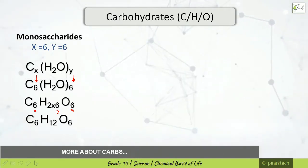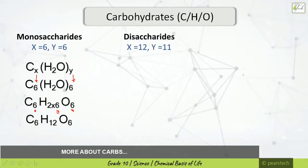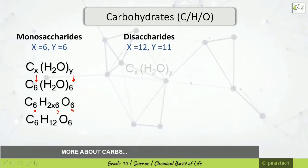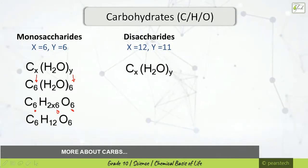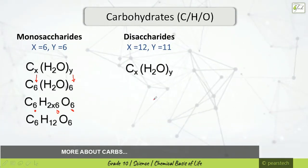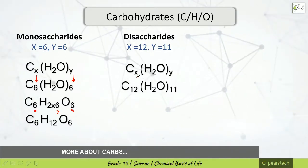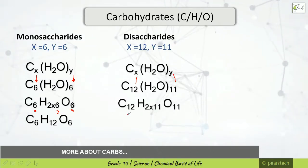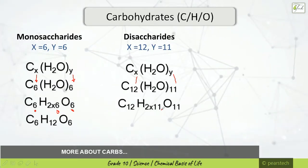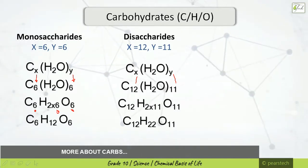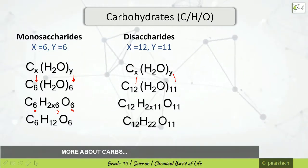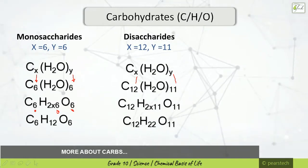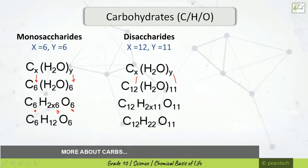For disaccharides, x equals 12 and y equals 11. Applying that to the formula Cx(H2O)y, we get C12H22O11. So the monosaccharide formula is C6H12O6, and the disaccharide formula is C12H22O11.